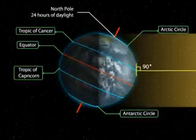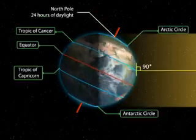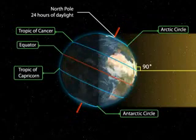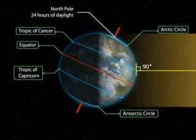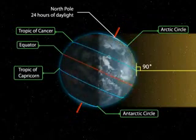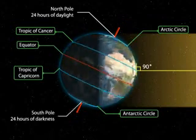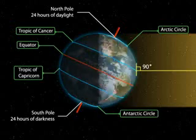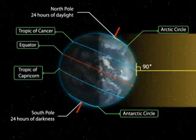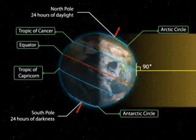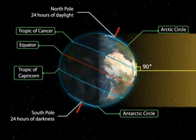Besides, there are 24 hours of daylight at the Arctic Circle and 24 hours of darkness at the Antarctic Circle.